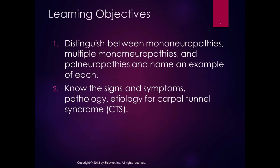The learning objectives are: I want you to be able to distinguish between mononeuropathies, multiple mononeuropathies, and polyneuropathies, and to name an example of each. I also want you to know the signs and symptoms, pathology, and etiology for carpal tunnel syndrome, also known as CTS. It's pretty common.